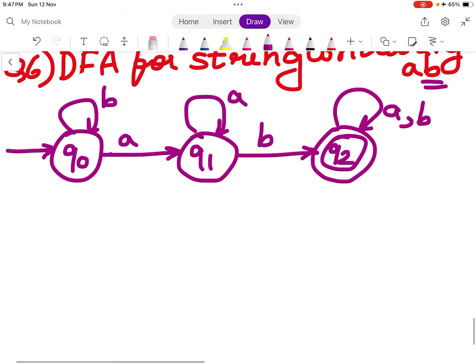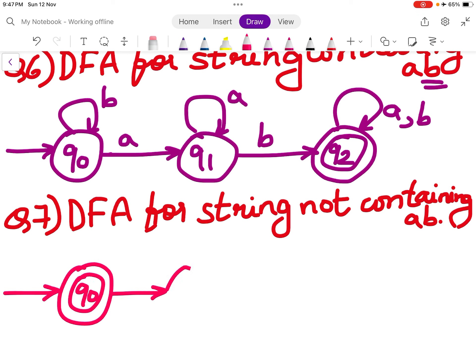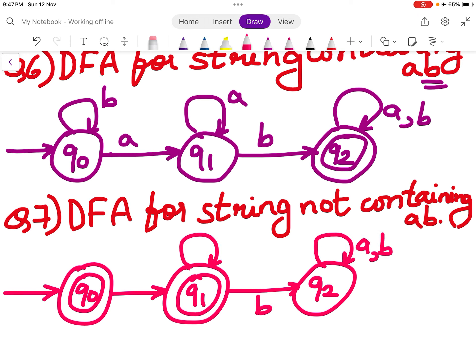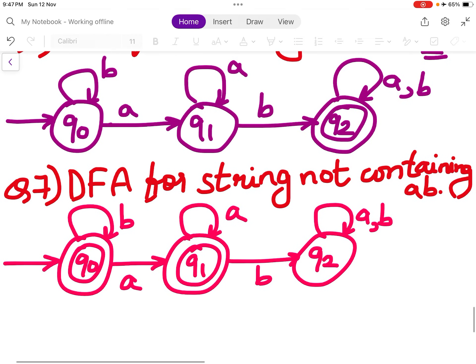For DFA for string not containing AB, the next question is DFA for string not containing AB. Simply the final states will become non-final and the non-final will become final. So your Q0 will become your final state, Q1 will become the final state, and Q2 which was a final state will become a non-final state. All the transitions will remain as it is.